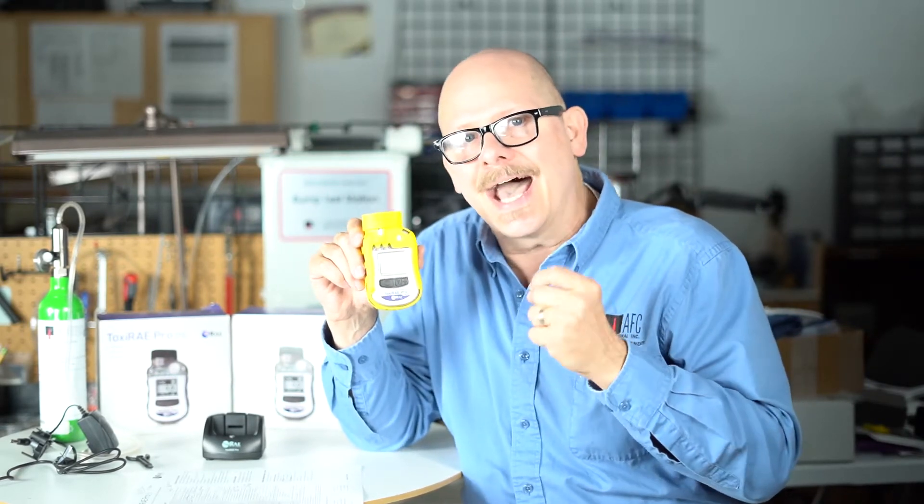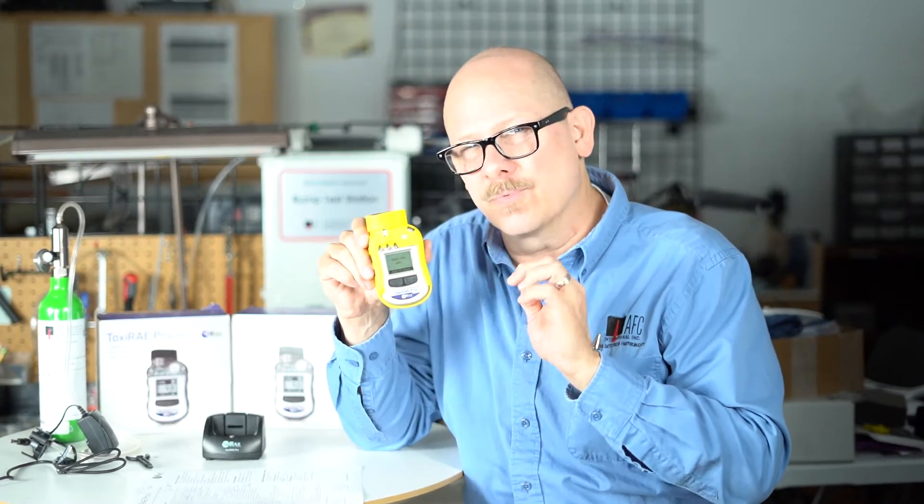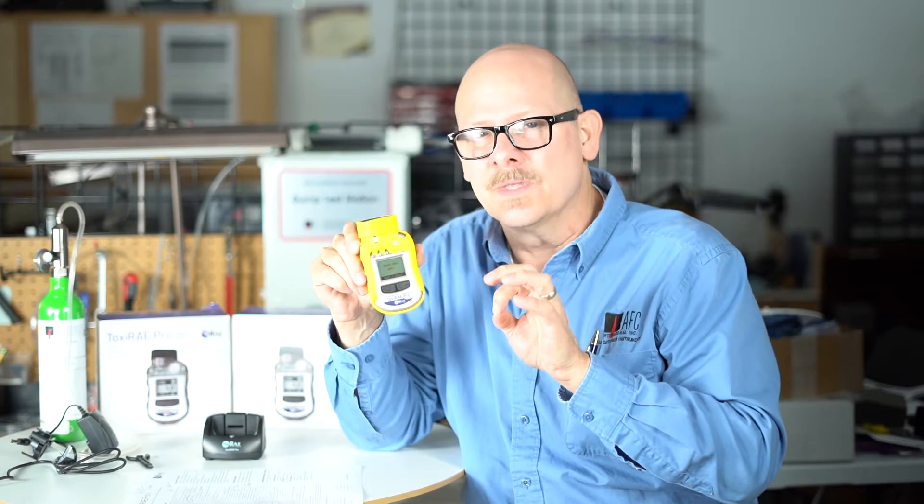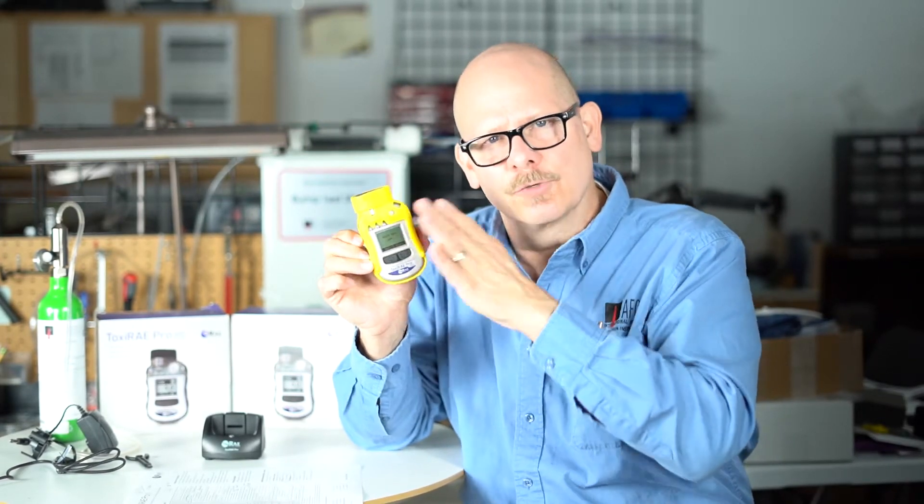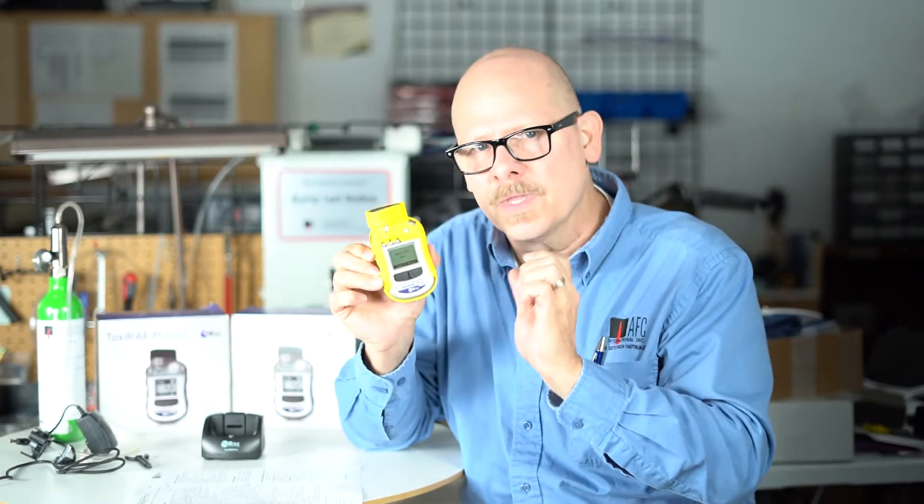I was just at a plant, and we were detecting for acrylin. Acrylin has an IDLH level of two parts per million. The time-weighted average is right around 0.2 to 0.3. So in those cases, I would have to go with the industrial hygiene version to get down to that low level.